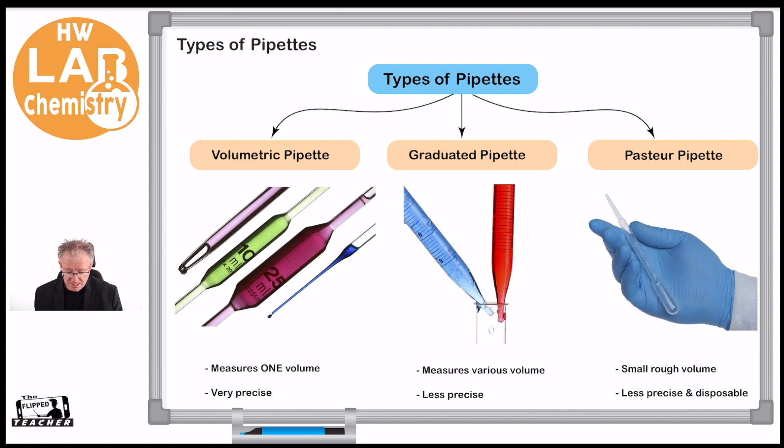You can see I've got volumetric pipettes with specific volumes that they're measuring—very precise, very accurate. These pipettes are used when we want to be incredibly precise with the amount of volume we want to measure or move from one place to another.